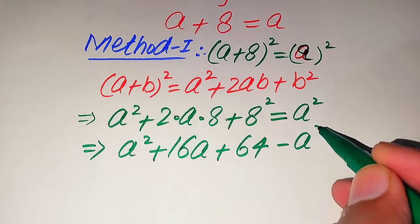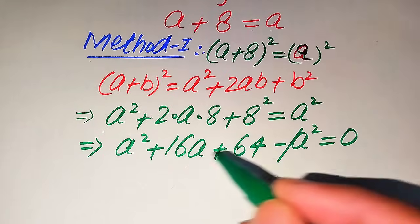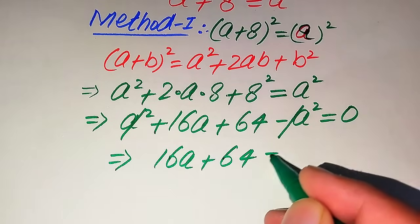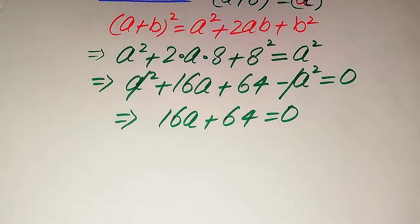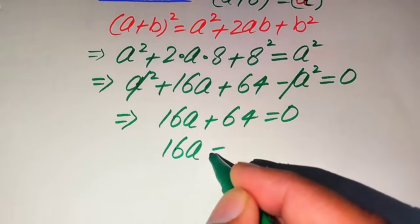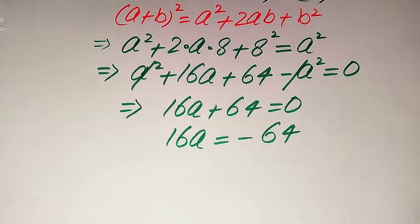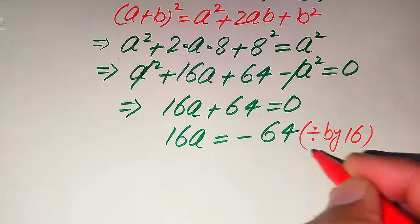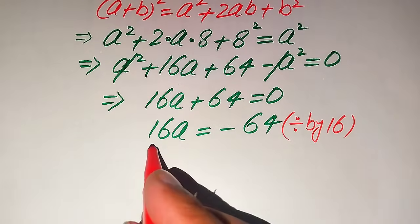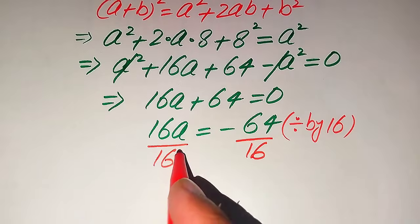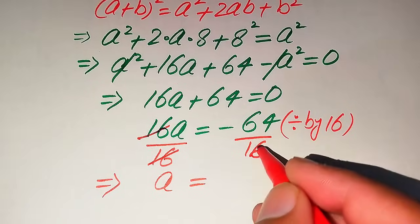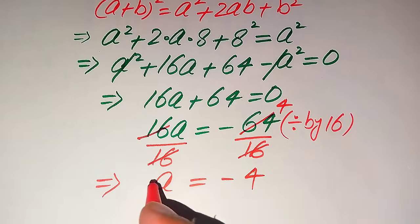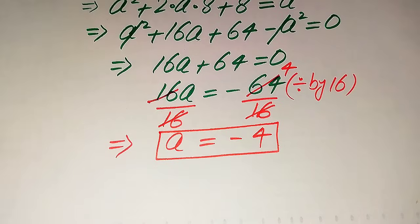Because our target is to find the values of a, we move a² to the left hand side. The positive a² and negative a² cancel out, leaving 16a + 64 = 0. Moving 64 to the right hand side gives 16a = −64. Dividing both sides by 16, we get a = −4. This is the first root of the given equation.